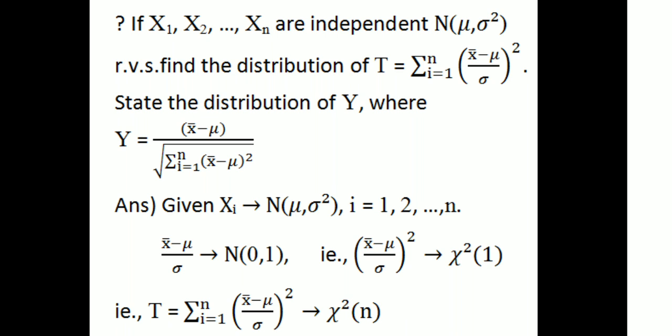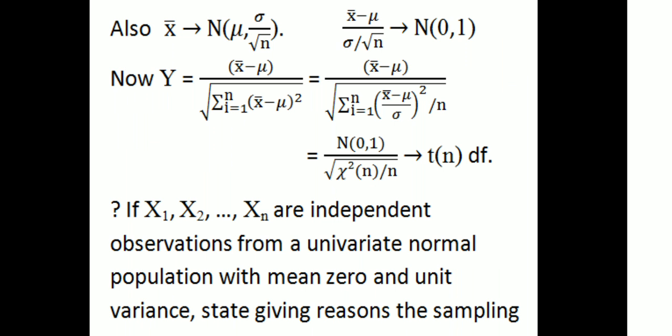By the additive property of chi-square distribution, chi-square(1) + chi-square(1) + … = chi-square(n degrees of freedom). Also, x̄ follows N(μ, σ/√n), so (x̄ − μ)/(σ/√n) follows N(0,1). Then y = (x̄ − μ) divided by the square root of chi-square(n)/n, which is the t-distribution — that is, N(0,1) divided by √(chi-square(n)/n), yielding the t-distribution.